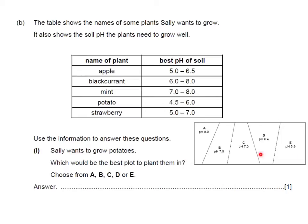So when we look at each of these plots and we try to find one which has got a pH between 4.5 and 6, the only one we have here is E at 5.9 and therefore the answer would be plot E.